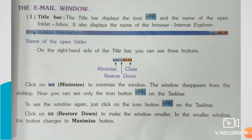For example, Windows Internet Explorer. The Title Bar also displays this. On the right side of the Title Bar, you can see three buttons: Minimize, Restore Down, and Close.